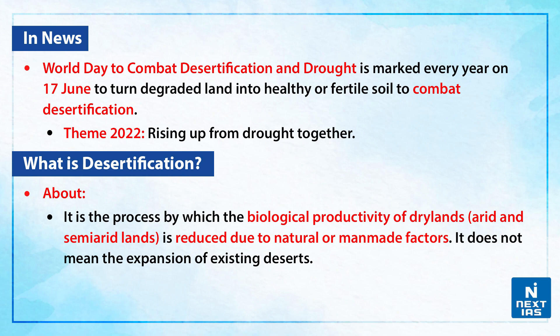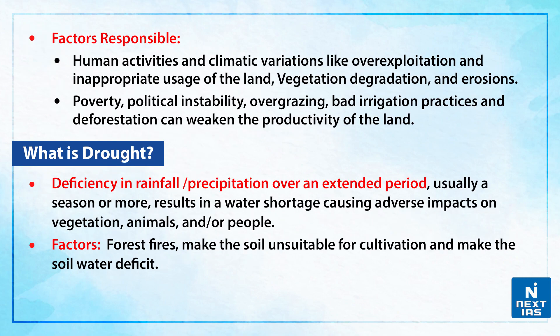What is desertification? It is the process by which the biological productivity of dry lands — that is, arid and semi-arid lands — is reduced due to natural or man-made factors. It does not mean the expansion of existing deserts.